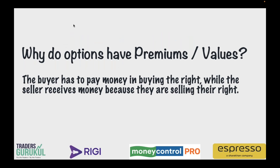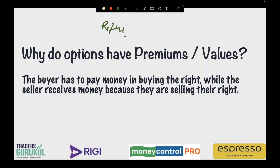Now, why do options have prices or values? If somebody wants to sell their right, the right seller gets some money and the right buyer has to pay some money. That's why options have a value or premium — because somebody is selling a right. Whenever you sell your right, you receive money; whenever you buy someone's right, you pay money.